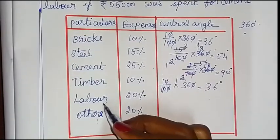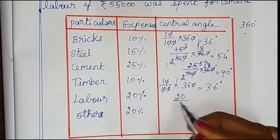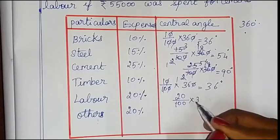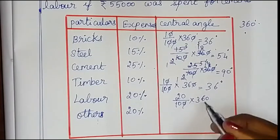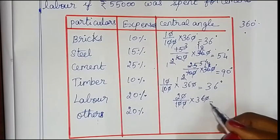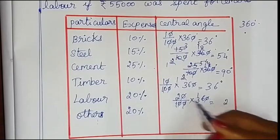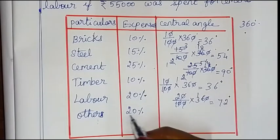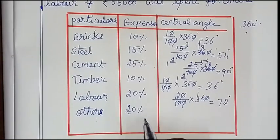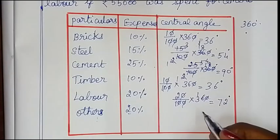Labor is 20 percentage. So 20 by 100 into 360 degrees. We cancel the zeros. The numerator: 2 sixes are 12, 3 twos are 6, 7 — 72 degrees. Labor central angle is 72 degrees. The denominator is correct.